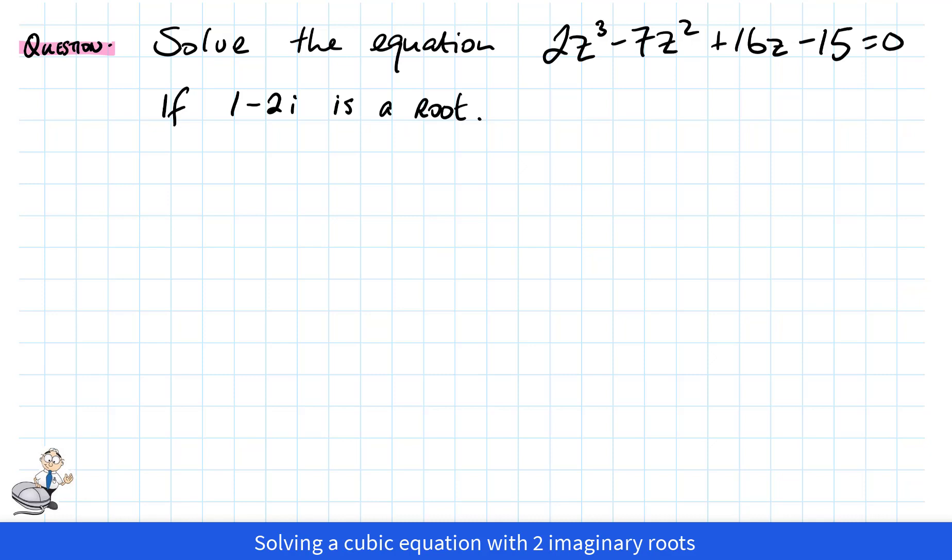Cubic equations have three roots. If one of the roots is imaginary, as given here, 1 - 2i, we know another root is also imaginary, and it's the conjugate of the given root. So if 1 - 2i is a root, we also know that 1 + 2i is a root.